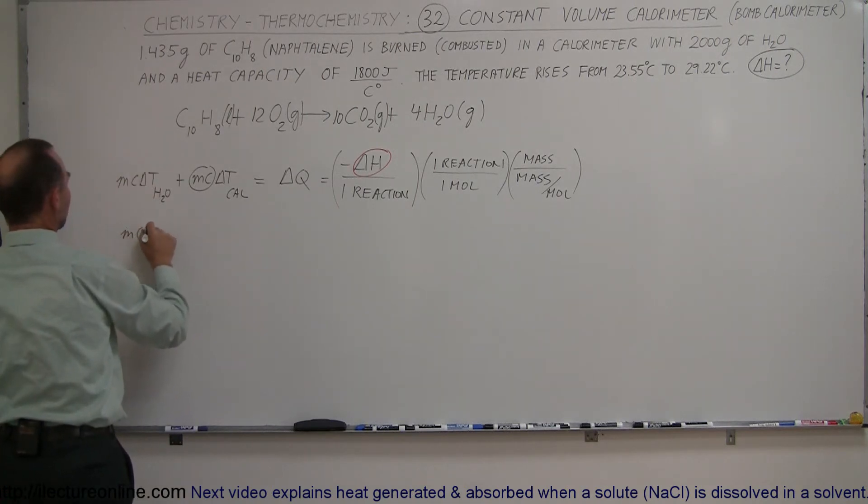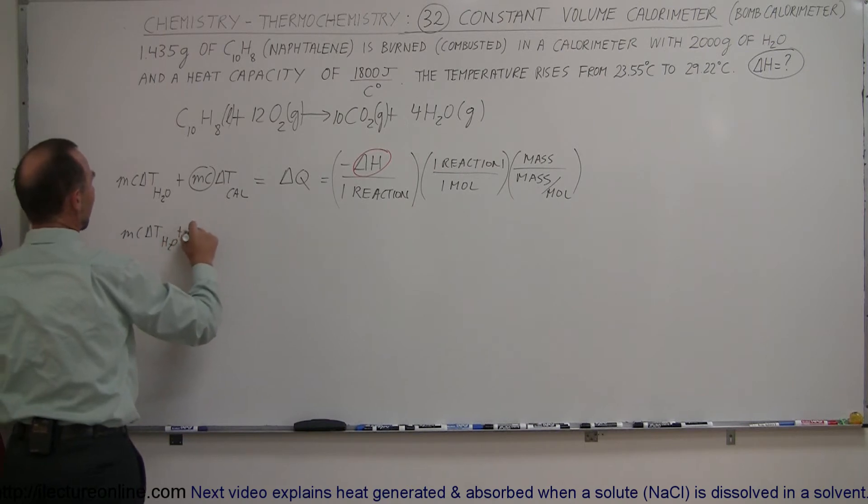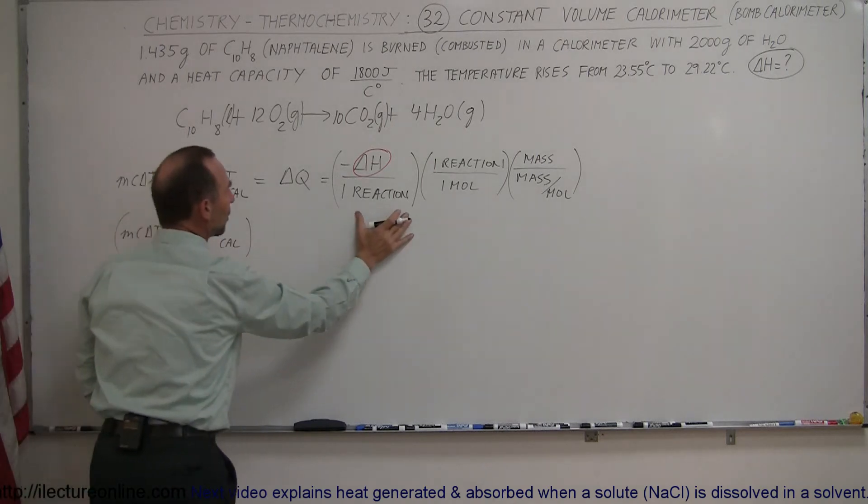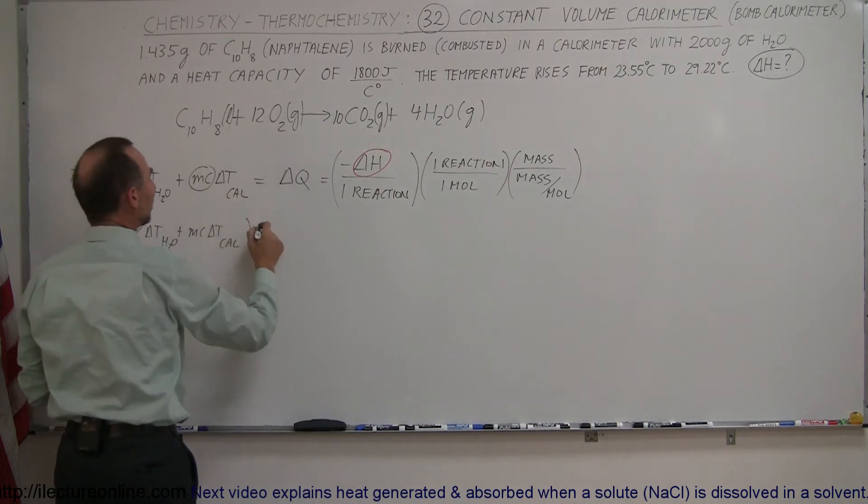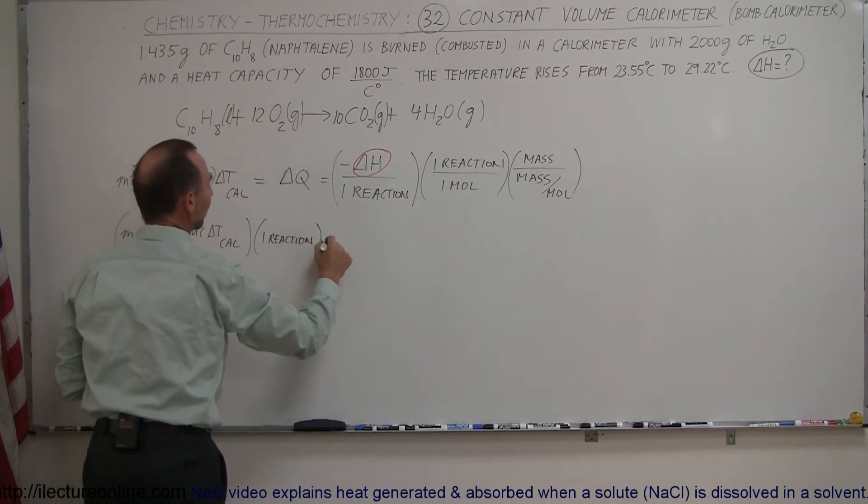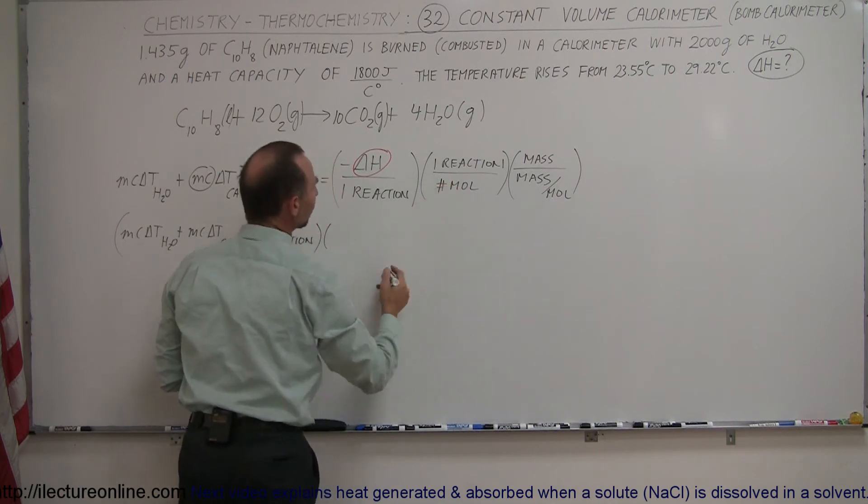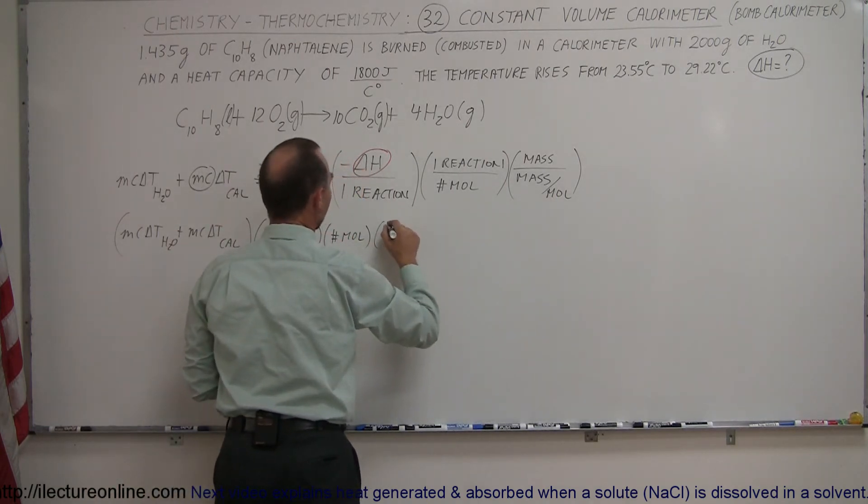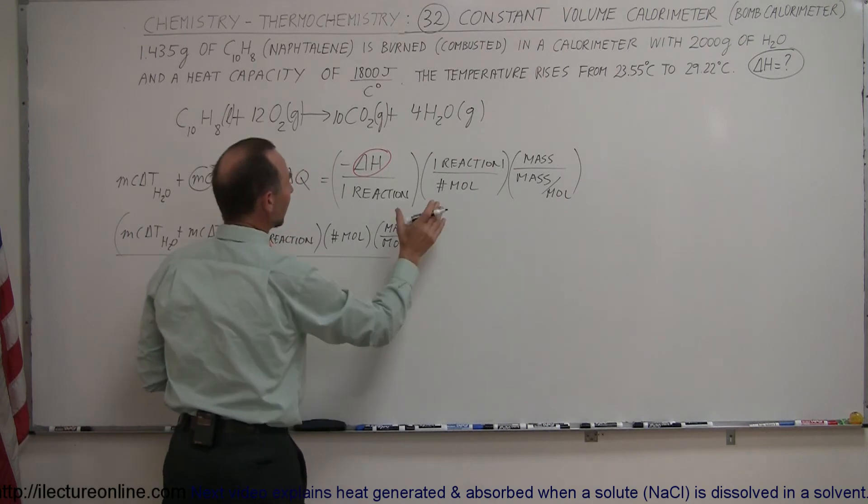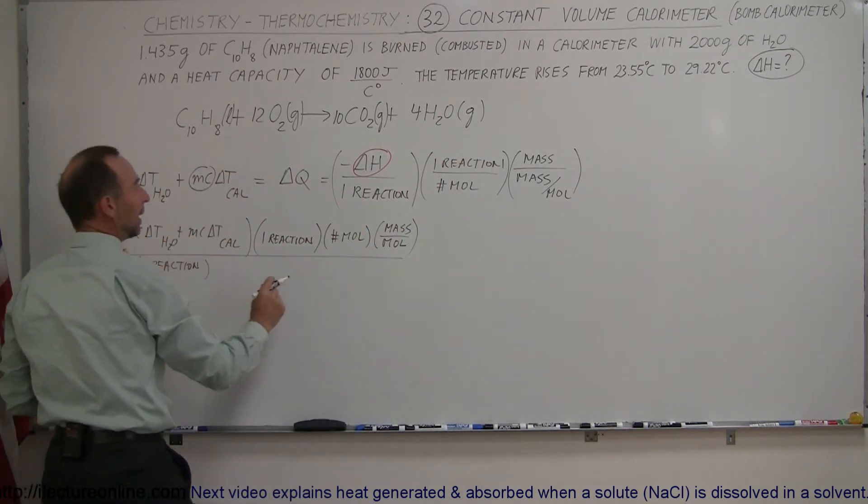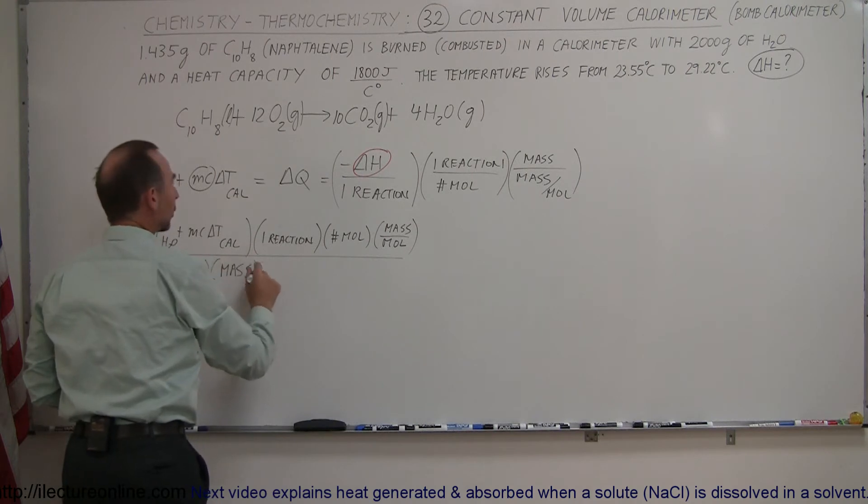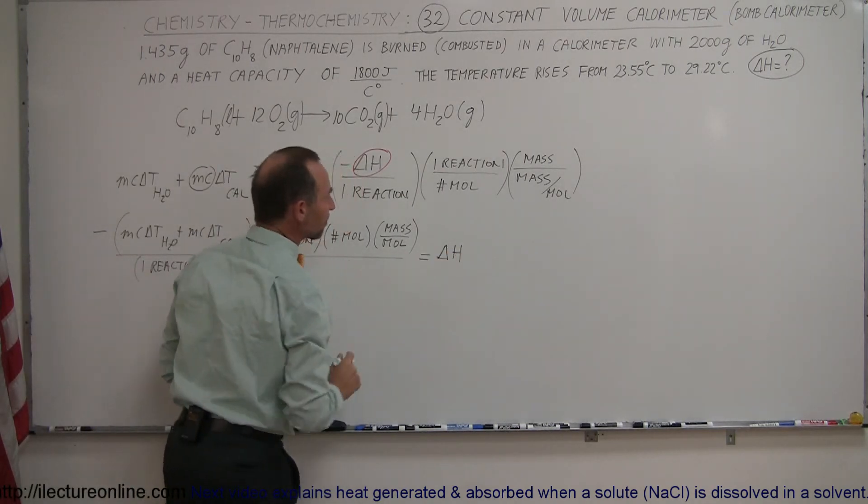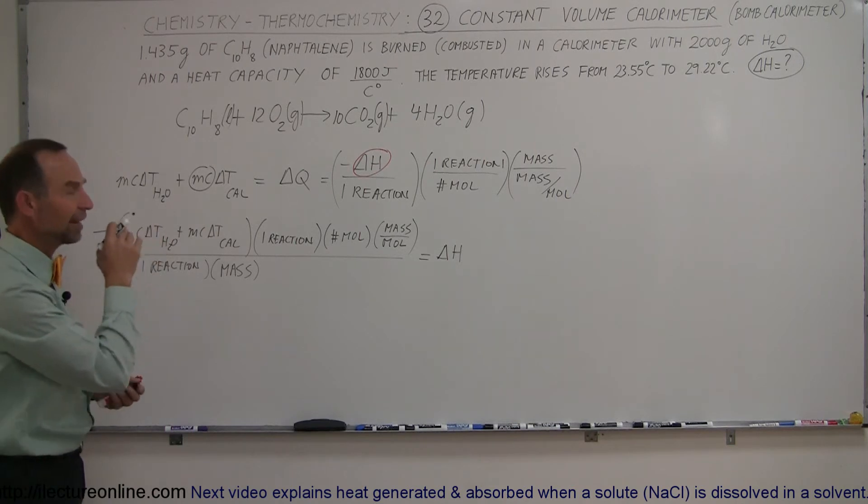That means our equation now becomes MC delta T for the water plus the MC delta T for the calorimeter. This is the heat gained by the water in the calorimeter. Now we multiply this times the reaction because anything in the denominator goes to the numerator. We have one reaction, the number of moles, and the mass per mole. Divide all that by what now goes in the denominator, so one reaction comes over here and the mass comes down here as well. We're going to take the negative and move it to the other side, and all that is equal to delta H.